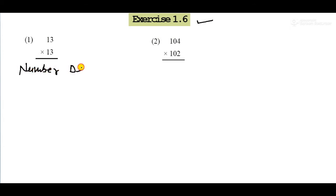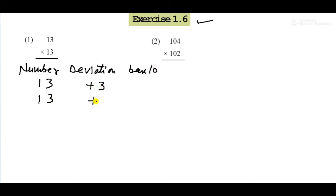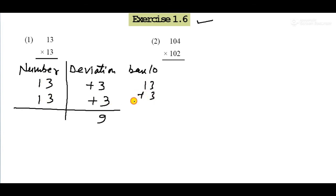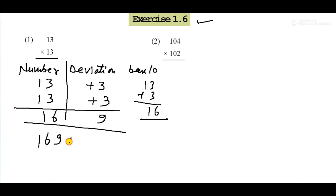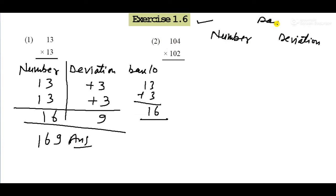Exercise 1.6, Question 1. Base is 10. Both numbers are 13, so both deviations are plus 3. Multiply: 3 times 3 equals 9. Add crosswise: 13 plus 3 equals 16. Answer is 169.